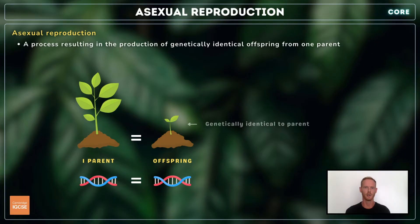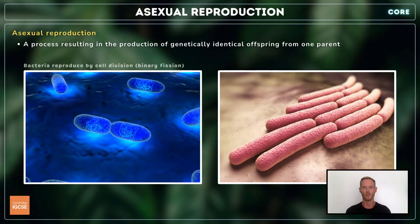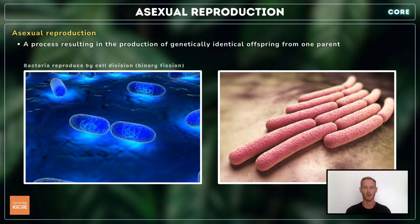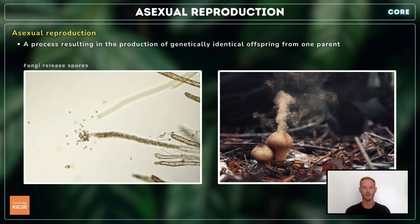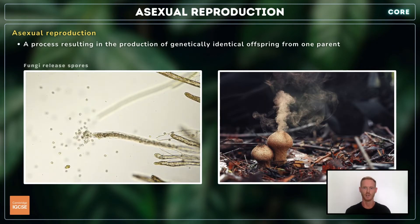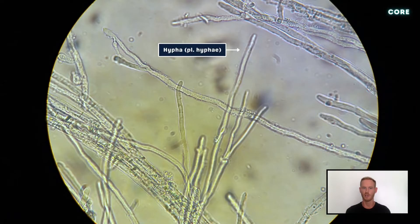Let's take a look at a few examples. Bacteria reproduce by cell division, otherwise known as binary fission — the cell divides, producing two exact genetic copies. Fungi reproduce asexually by releasing spores, which are dispersed by the wind and develop into new hyphae when they land on a suitable substrate. Hyphae are the branching filaments that make up the mycelium of a fungus.